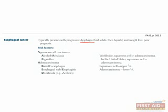Worldwide, squamous cell cancer is the most common because squamous cells are the usual lining of the esophagus. In the U.S., the most typical risk factor is Barrett's esophagus from GERD. Once those cells have undergone metaplasia to intestinal columnar cells, the cancer that develops from them is adenocarcinoma. Since Barrett's is in the lower region of the esophagus, just above the stomach, adenocarcinoma is usually in the lower one-third of the esophagus, while squamous cell carcinoma is generally in the upper and middle two-thirds.